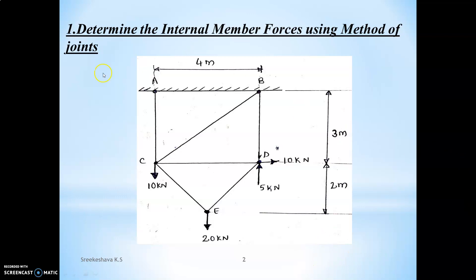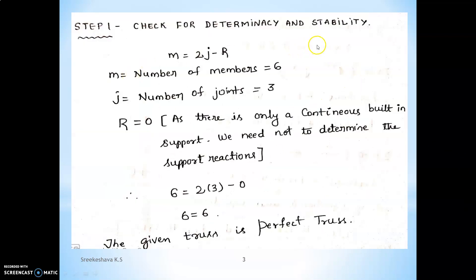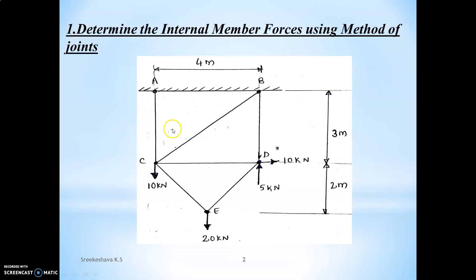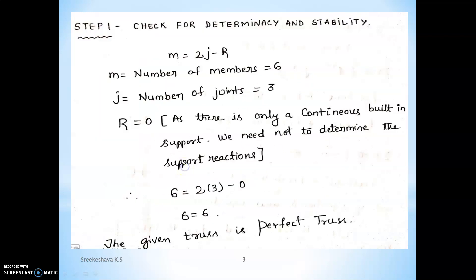Let us solve this particular problem. In step 1, we check whether the given truss is perfect using M equal to J minus R. Counting members: 1, 2, 3, 4, 5, 6 — six members. For a hanging truss, don't consider the two fixed support joints since there is fixity there — they are not pin joints. So only three joints are present. How many reactions? Since there is a built-in support, we need not determine support reactions; therefore R is zero. Applying the equation, the given truss is a perfect truss.